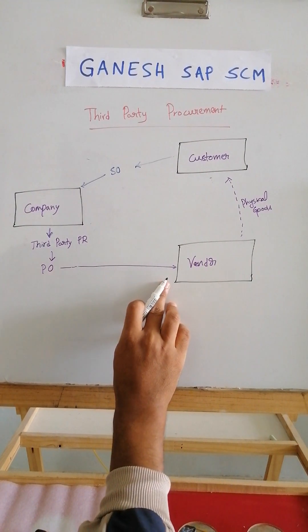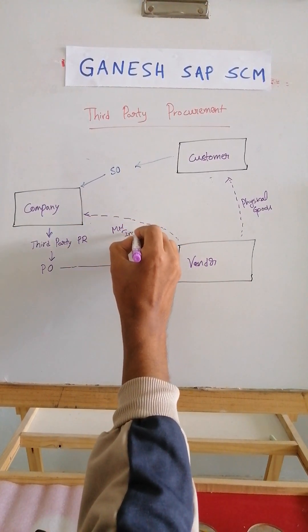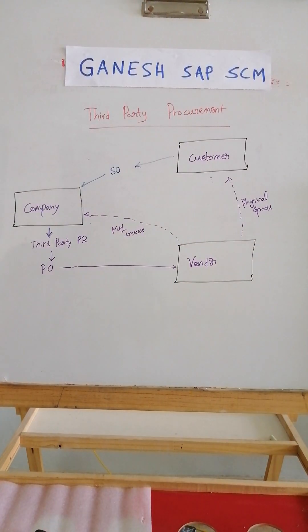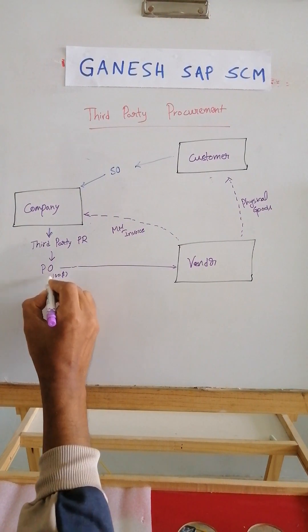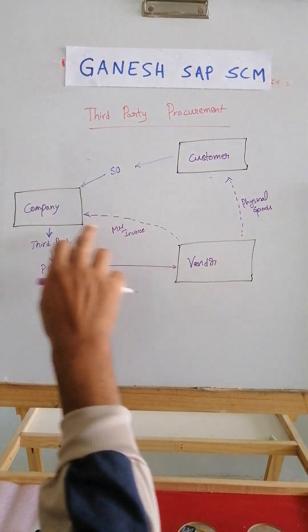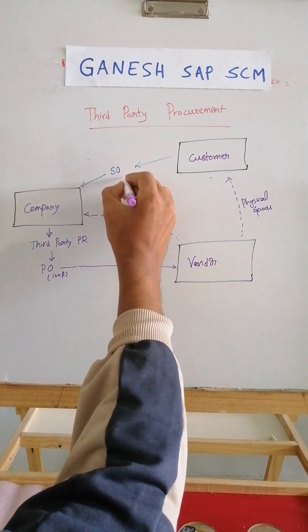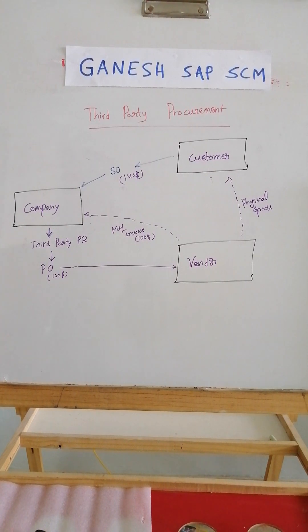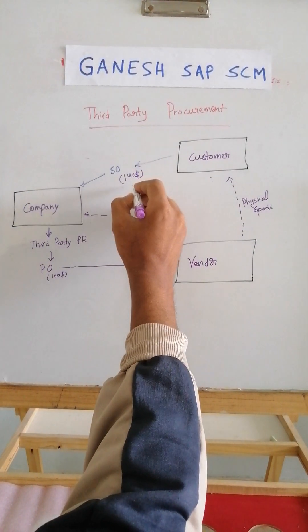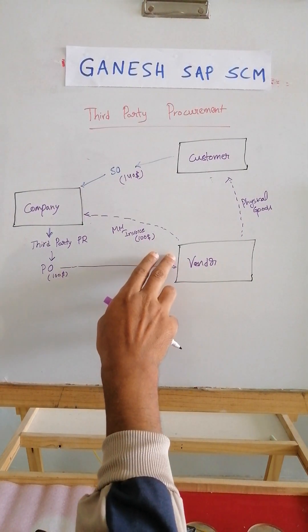The purchase order is sent to the vendor, and the MM invoice — the vendor invoice — will be sent back to the company. For example, if the PO was created for $100, the system will create a $100 PO and the vendor sends an invoice to the company for the same $100. In the sales order, a price of $140 was already negotiated. There will be a separate sales pricing procedure where the company maintains the material price, handling charges, and markup fee, adding up to $140 for the sales order price.